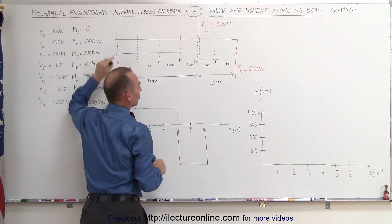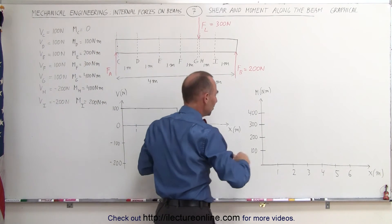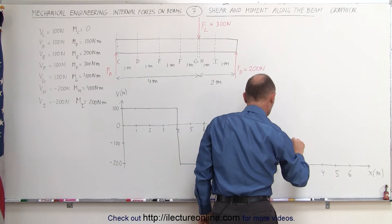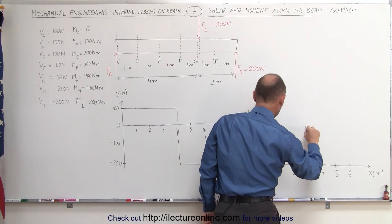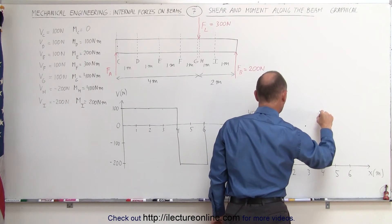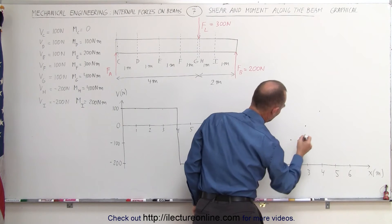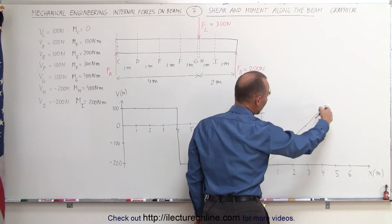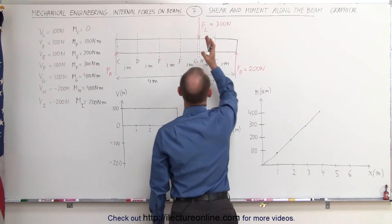Which means that at one meter, you have a 100 newton meter moment. At two meters, 200 newton meters. At three meters, 300 newton meters. And at four meters, 400 newton meters. So we have a steady increase. Let me try to draw a straight line here. We have a steady increase of the moment until we hit the load.